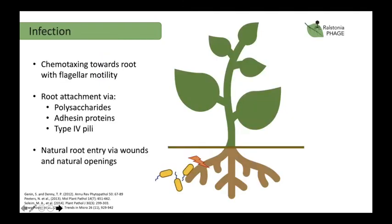In terms of the mechanistic side of infection: Ralstonia is present in the soil and locates the plant root by chemotaxing towards it using flagella motility. It attaches to the root via both reversible and irreversible mechanisms using polysaccharides, adhesin proteins, and type 4 pili. Natural root entry into the plant is via wounds or natural openings.